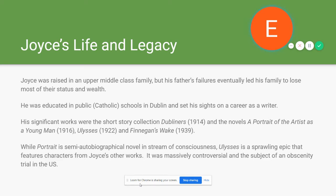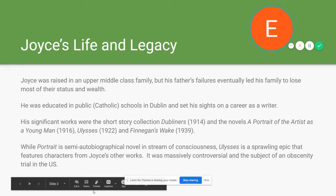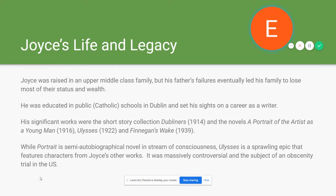His most significant works include the short story collection Dubliners, published in 1914, and three main novels: A Portrait of the Artist as a Young Man (1916), Ulysses (1922) — his masterpiece — and Finnegans Wake (1939). Portrait is a semi-autobiographical stream-of-consciousness novel; many events from Joyce's actual life appear in it, and the character Stephen Dedalus goes through many of the same struggles Joyce did. Ulysses is a far more complex and sprawling epic that also incorporates characters from other works, and was massively controversial.